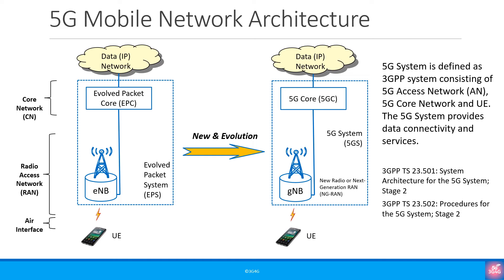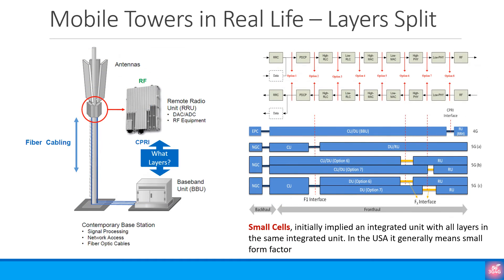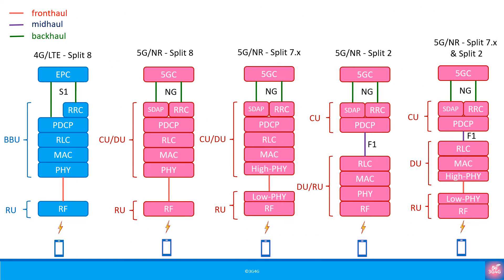Let's look at a couple of views from network equipment vendors. Before that, let us quickly review the 5G RAN functional splits. The 5G architecture at a high level is similar to 4G, but for 5G the BBU is split into a central unit CU and a distributed unit DU. There are different splits possible, leading to different layers ending up in CU and DU. While for 4G we have the split 8 architecture, for 5G the popular options are split 8, 7.X, 2, and a combination of 2 and 7.X.